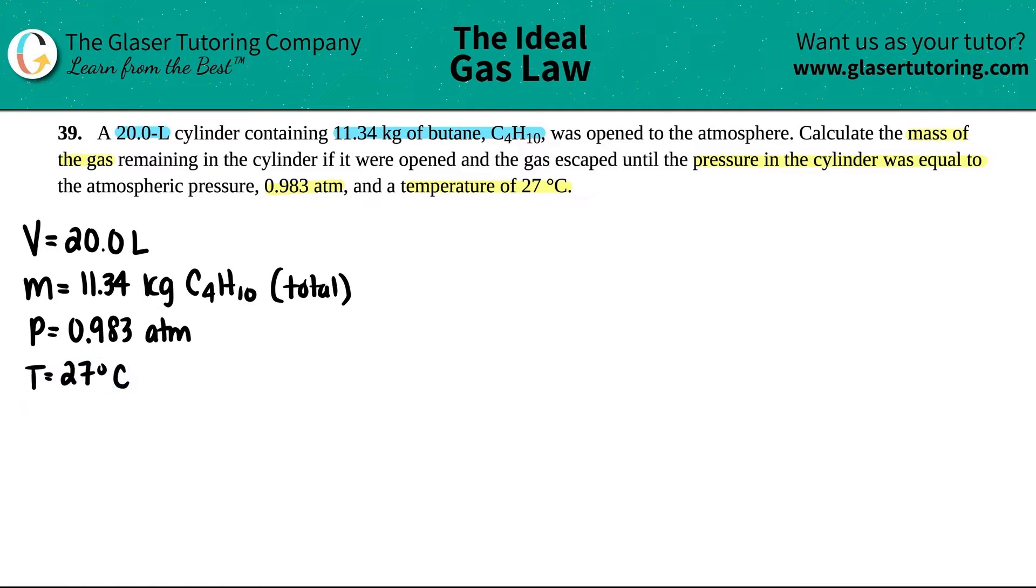So remember, if we have only one value for each variable, so I only have one volume, I got one pressure, I got one temperature, I don't have any sets, I don't have two volumes or two pressures or two temps. This is your ideal gas equation, which is this one, right? PV equals nRT. Now this one is very specific in terms of units because it all rests on the universal gas constant, which is the R value.